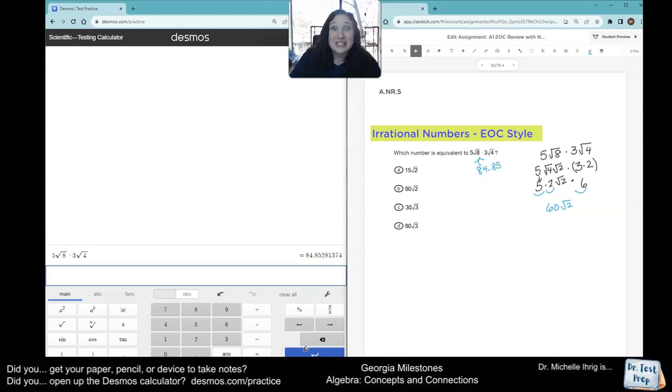Then we just type in each of the answer choices. 15 radical two, 21.21. Not the correct answer. 60 radical two, 84.85. Bingo. That's the one we want. That's the correct answer.